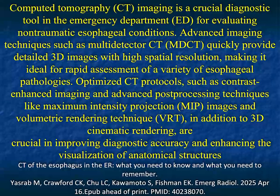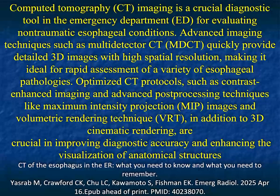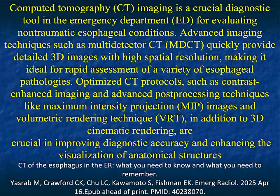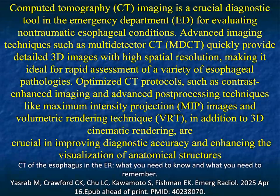CT is critical in the ER for many things, and esophageal pathology is one of them. There's a range of pathologies to consider — some benign and incidental, like esophageal duplication cysts or leiomyomas, and others urgent, like cancer or achalasia with symptoms. Esophagitis, foreign bodies, and ingested material can all present mimicking aortic dissection, pulmonary embolism, or pancreatitis. Esophageal pathology is really a challenge, but thinking through everything covered here will help you make the correct diagnosis.